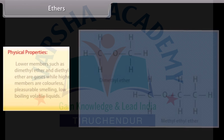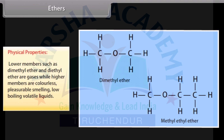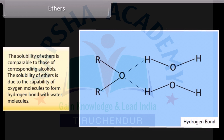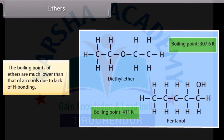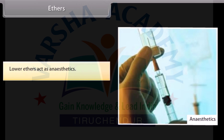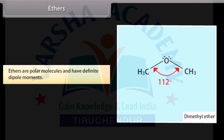Physical properties of ethers: lower members such as dimethyl ether and diethyl ether are gases, while higher members are colorless, pleasant-smelling, low-boiling volatile liquids. The solubility of ethers is comparable to that of corresponding alcohols, due to the capability of the oxygen atom to form hydrogen bonds with water molecules. The boiling points of ethers are much lower than those of alcohols due to the lack of hydrogen bonding. Lower ethers act as anesthetics. Ethers are polar molecules and have definite dipole moments.